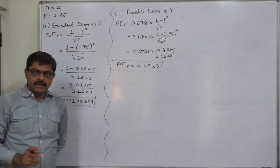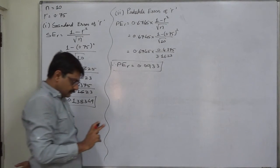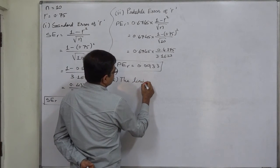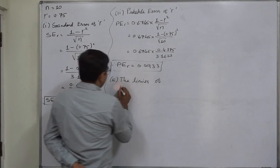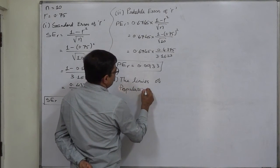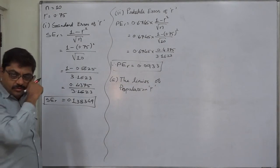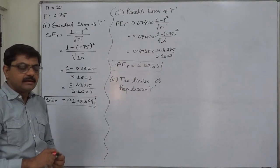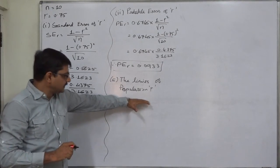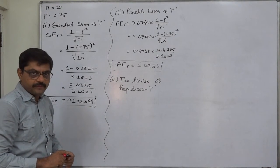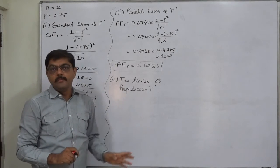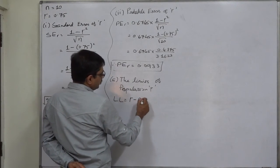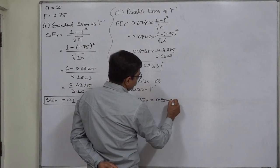Now, on the basis of probable error, we can study two other things. The first is the limits of population correlation coefficients. We know the term population correlation coefficient — if we draw another sample or samples from the same population and calculate the coefficient of correlation for that sample or samples, we call that the population correlation coefficient. By this term, we do not at all mean the correlation coefficient for the whole population.